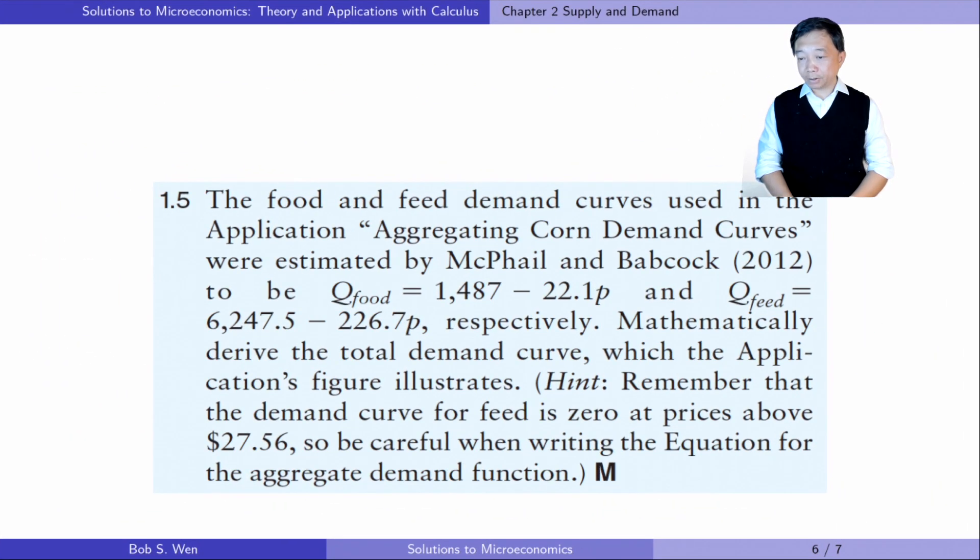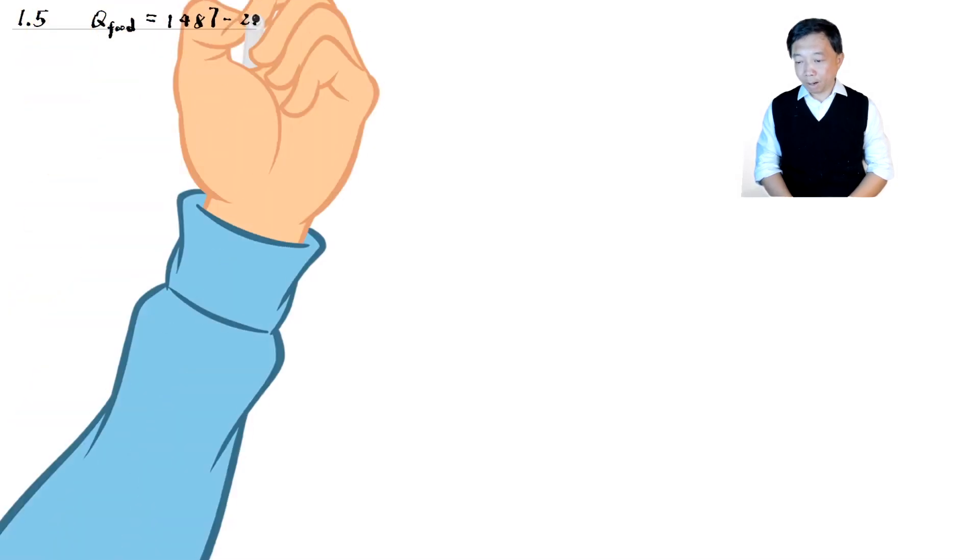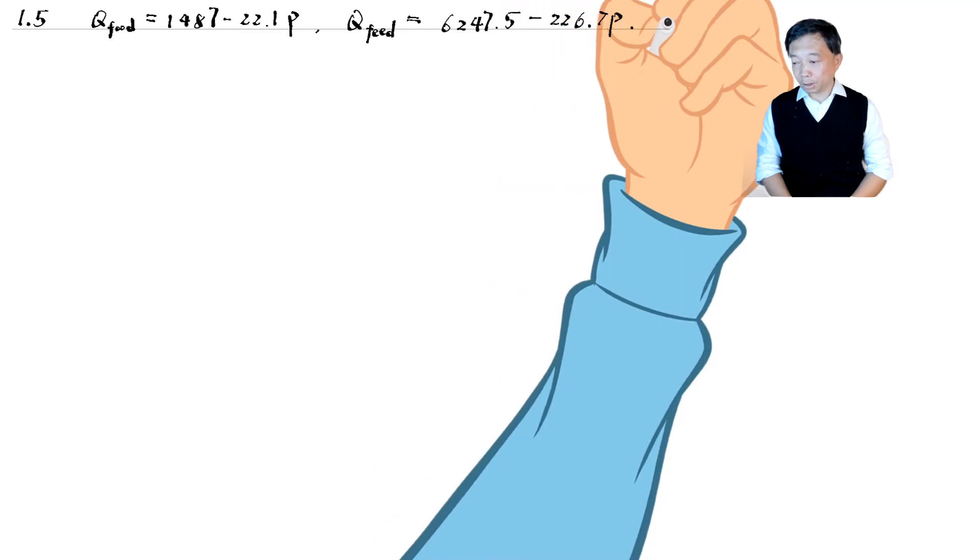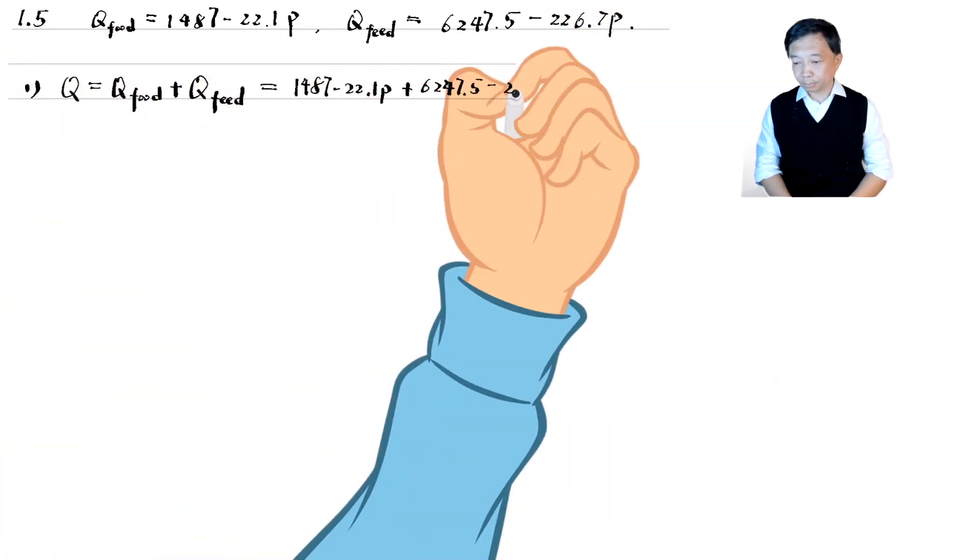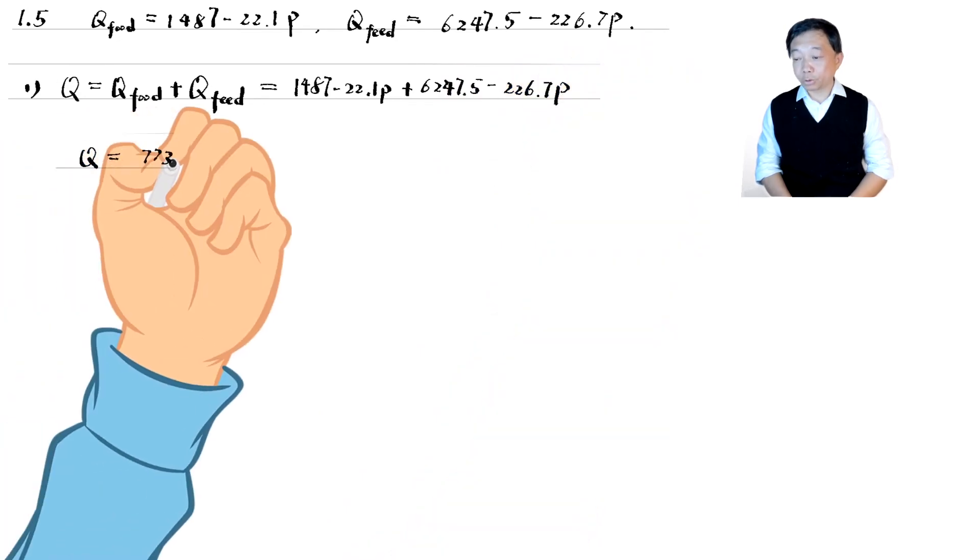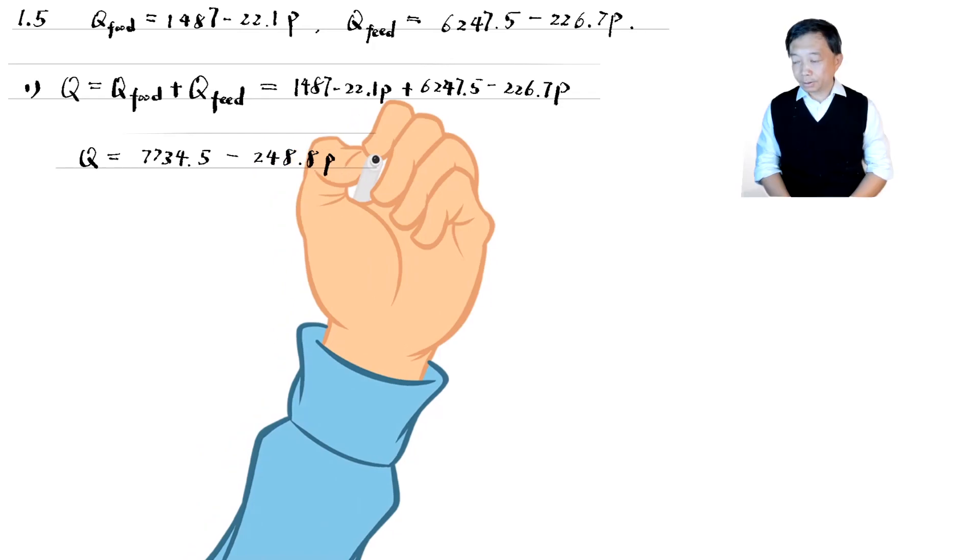Let's solve exercise 1.5. The food and feed demand curves used in the application aggregating corn demand curves were estimated as follows. Mathematically derive the total demand curve. The total quantity demanded at a given price is the sum of the quantity each consumer demands at that price. That is, we add the demand curves horizontally. In the second step, we find the particular values in the graph.